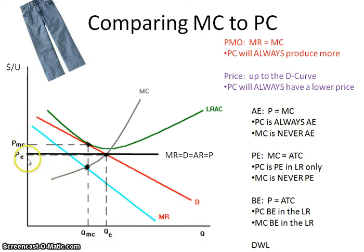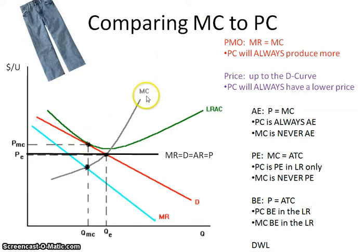The same is true when we look at price. The price of the monopolistically competitive will always be higher than the perfectly competitive, because their marginal cost curve is below their price. Therefore, you're always going to have a price higher than the perfectly competitive, where price and marginal cost are equal to one another.